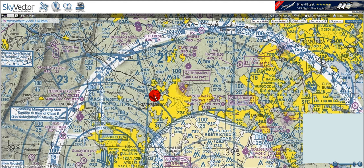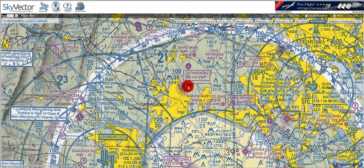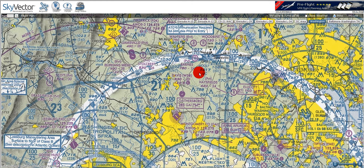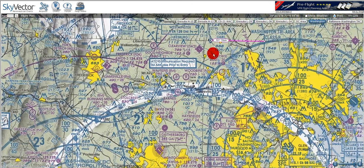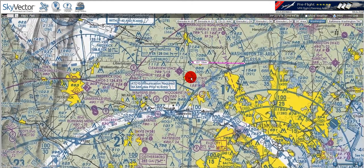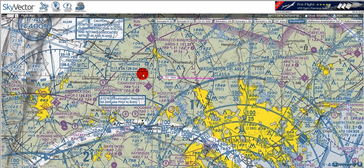Here we can see Gaithersburg Airport, which has an NDB located on the field, as we can see by these concentric circles that are dotted. If we move up here to the Westminster VOR, or EMI, we can see that it's a VORTAC.